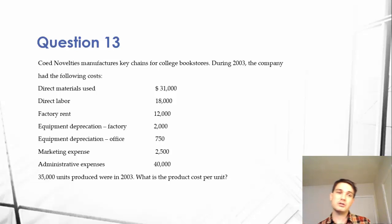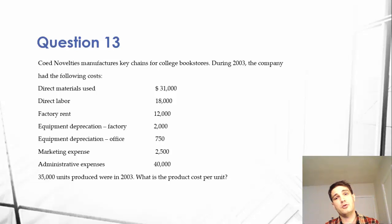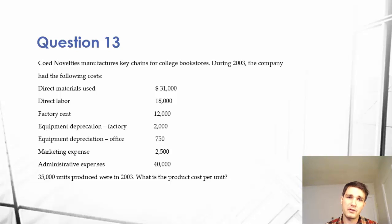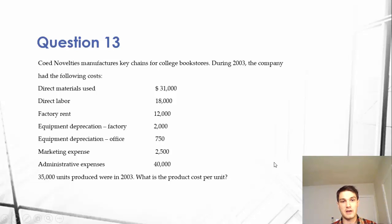This question has an overarching theme that's extremely important to understand if you want to move forward in business. It's extremely important to know how to separate out your product costs from your office costs — sometimes called product costs and period costs. The most important thing to realize is that our product costs include things like direct materials, direct labor, and factory overhead.